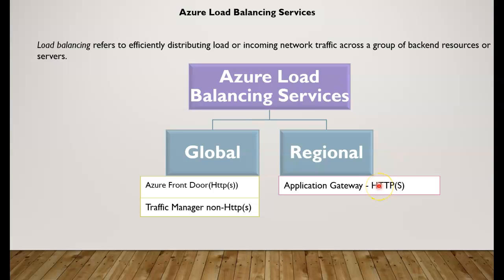Application Gateway can work with HTTP and HTTPS. The other regional option is the Azure Load Balancer, which operates at layer 4 for TCP and UDP based load balancing. It can be geo-redundant or provide high availability across availability zones, and it also supports NAT functionality within the load balancer.